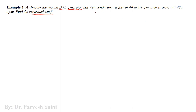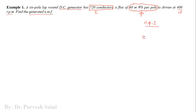The given parameters are: number of conductors Z, flux per pole phi, and speed N in rpm. The EMF equation is: Eg = (N × P × phi × Z) / (60 × A). Number of poles P is also given as six.